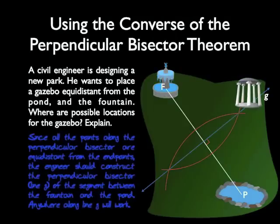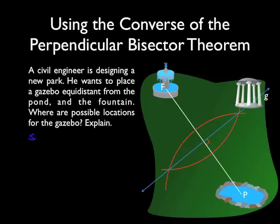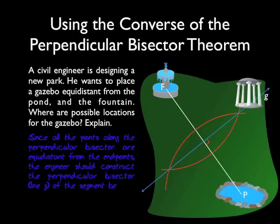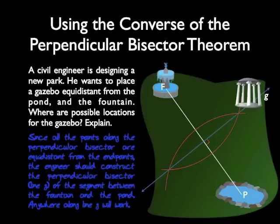A proper answer would read something like this: since all the points along the perpendicular bisector are equidistant from the endpoints, the engineer should construct the perpendicular bisector, line G, of the segment between the fountain and the pond. Anywhere along line G will work.